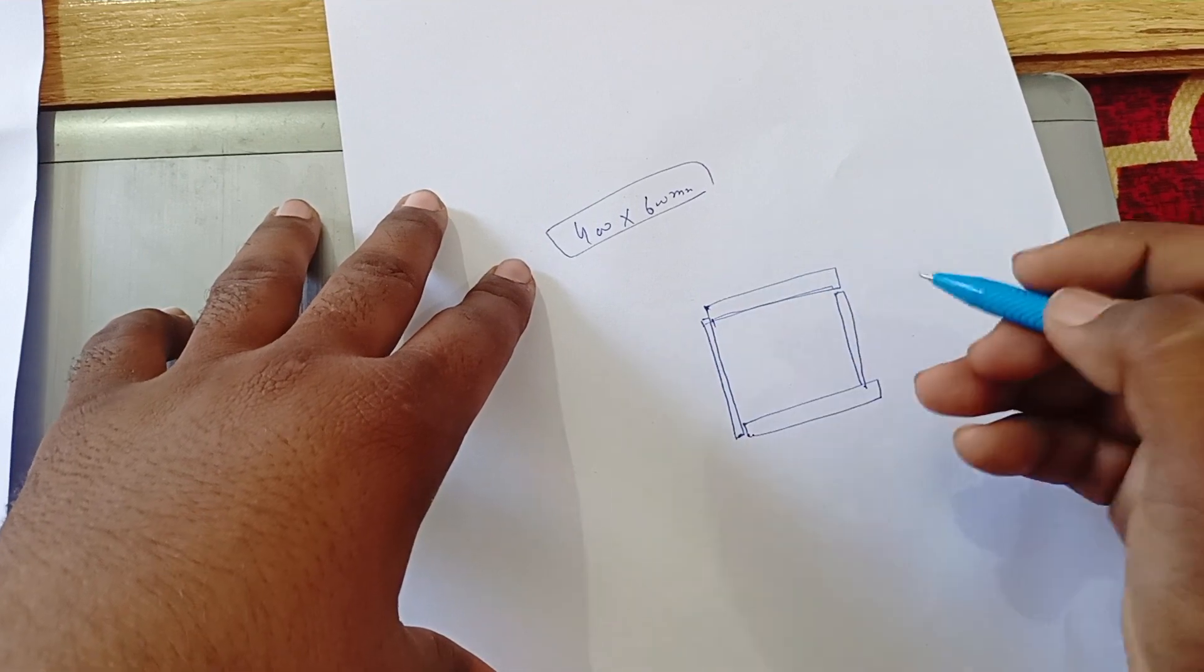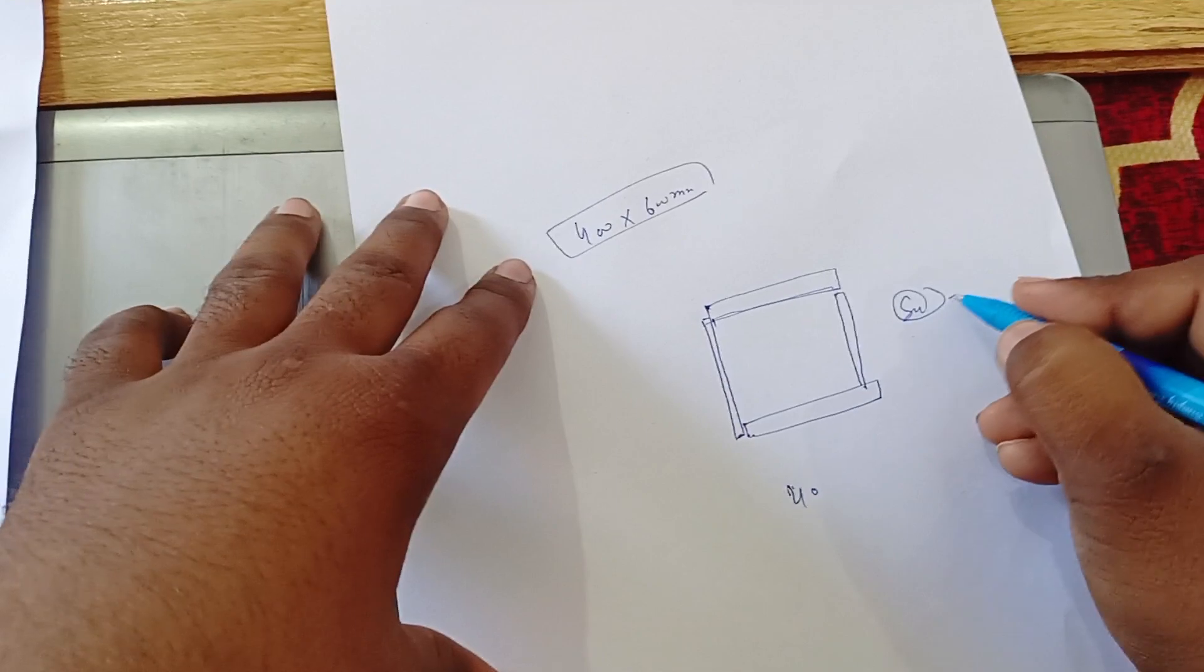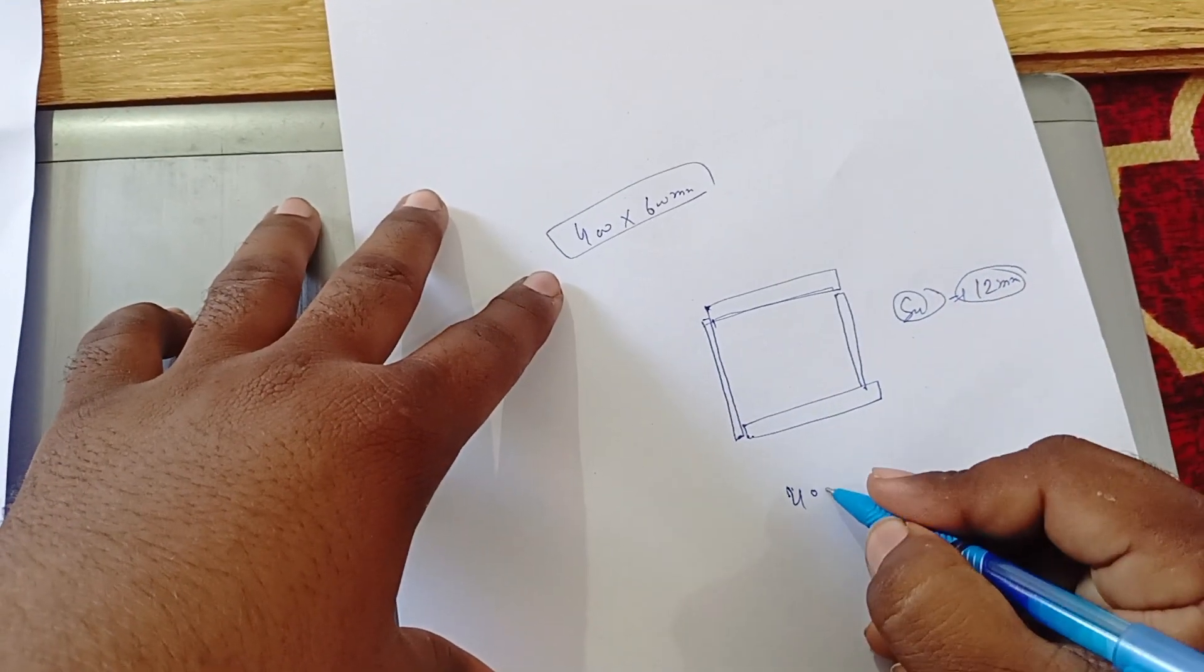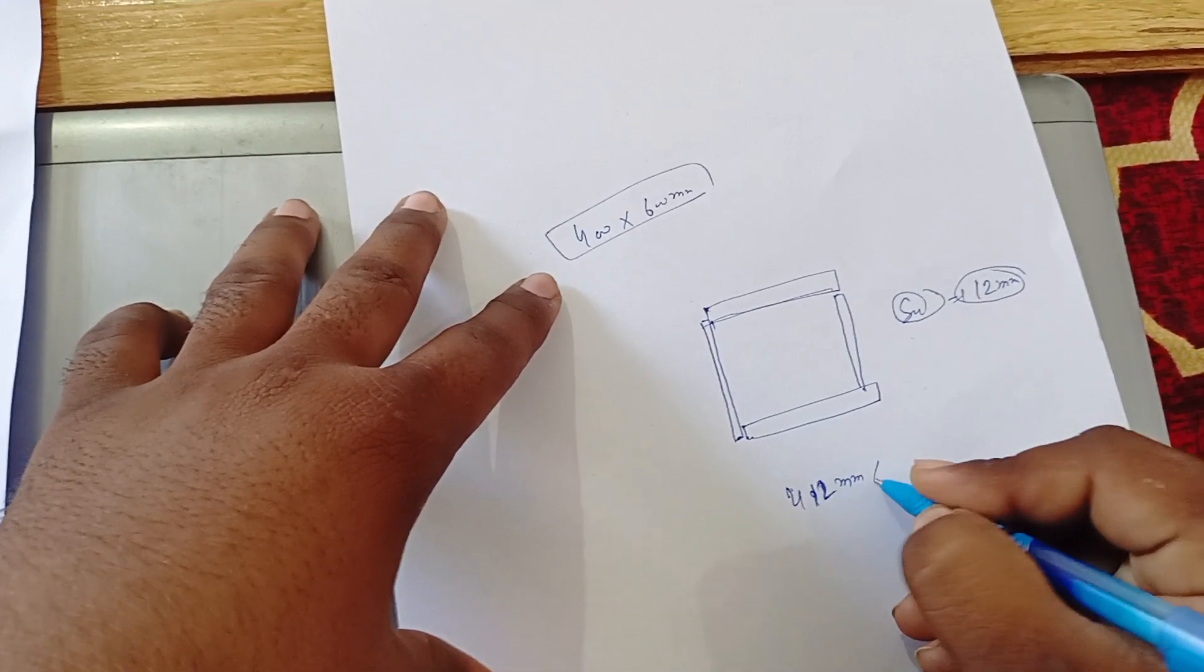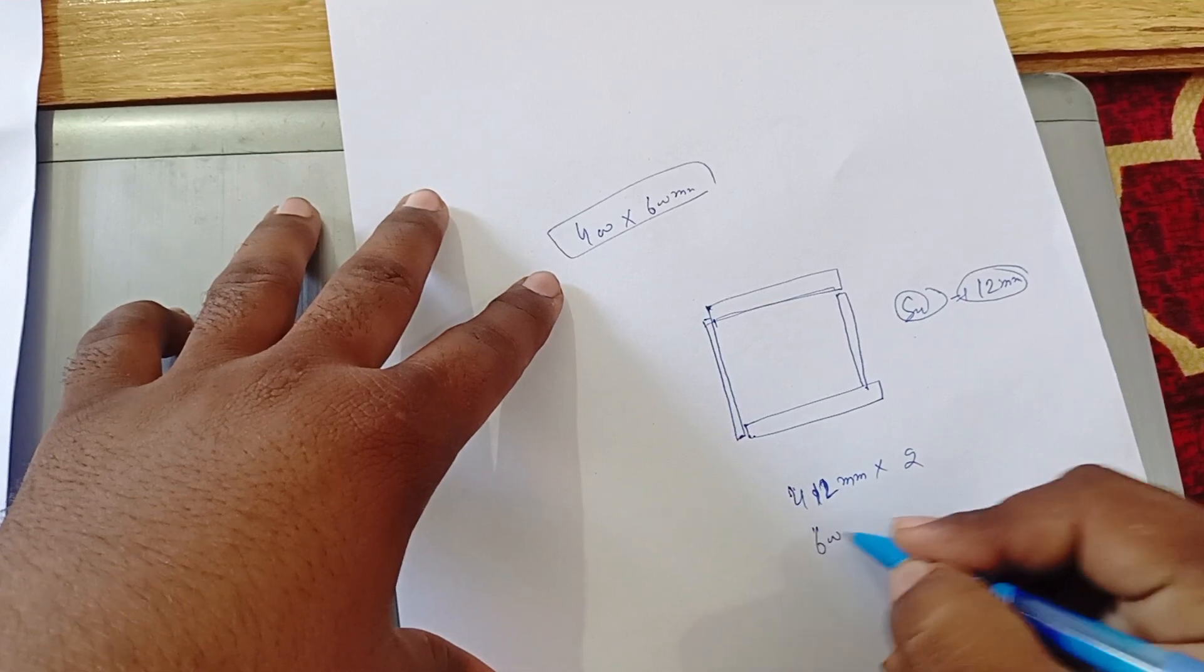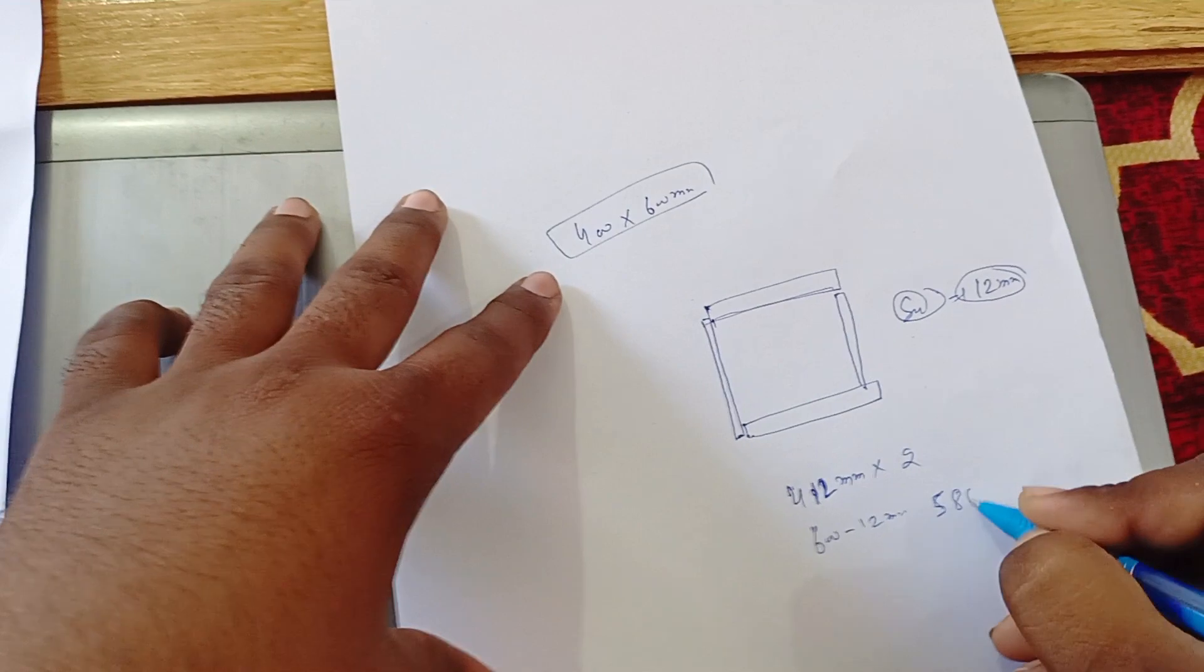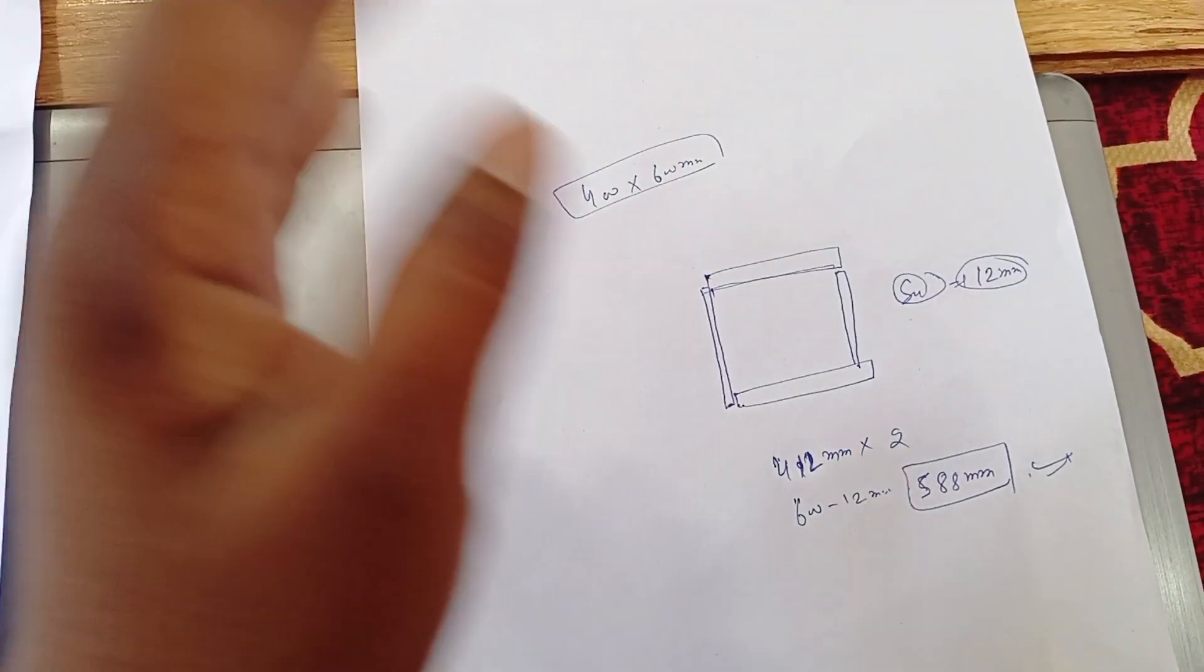We will fit like this and we will fit like this. So we will use generally 4, suppose our ply thickness is equal to 12mm, so we will use generally 4, 1, 2mm of 2 piece and 4, 600 minus 12mm is equal to 5, 88mm of 2 piece. Because they can fit each other so that corner will be neat and clean.